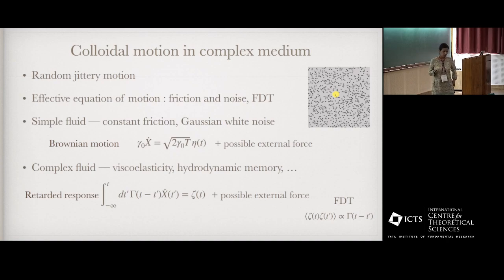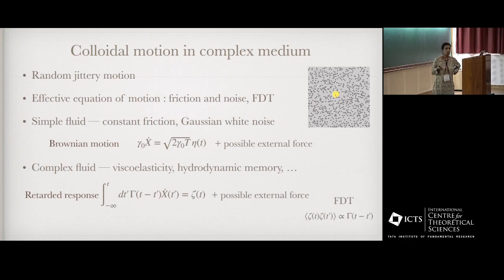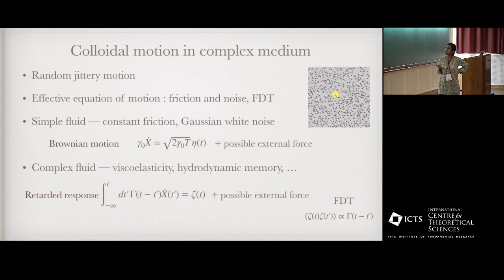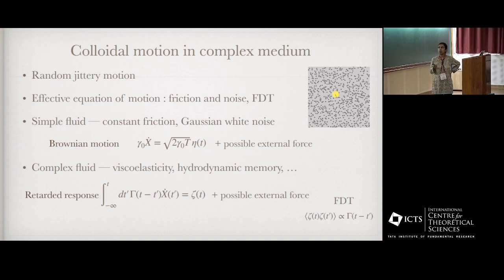The random motion of a colloidal particle in contact with some complex medium is typically described by an effective Langevin equation, where the effect of the medium on the particle is encoded in two forces: the so-called friction and noise. We have already heard about this many times in this conference. In equilibrium, friction and noise are related by the fluctuation-dissipation theorem. For the simplest case — a simple fluid — friction is constant, proportional to velocity, noise is Gaussian white noise, and we have the well-known Brownian motion for an overdamped particle.